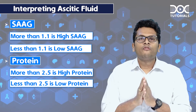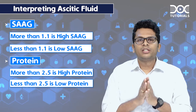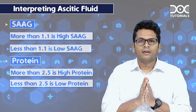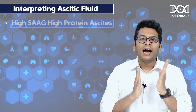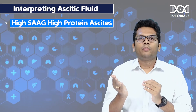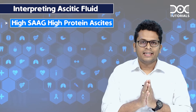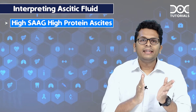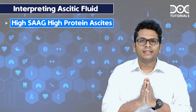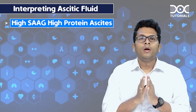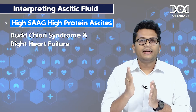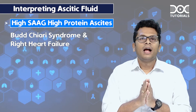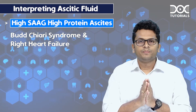There are four combinations which can occur. The first is high SAAG, high protein ascites. For this, we should be thinking about Budd-Chiari syndrome and right heart failure as the causes.